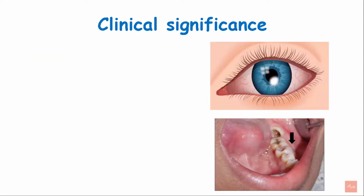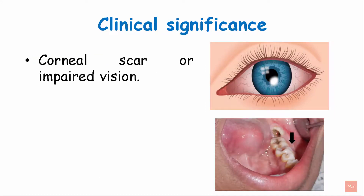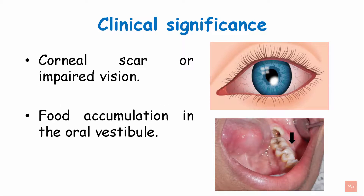Clinical significance includes corneal scar or impaired vision. When there is drooping of the eyelid, the eyelid gets everted, lacrimal fluid does not spread over the cornea, and inadequate hydration or lubrication can cause a corneal scar. Another complication is food accumulation in the oral vestibule.